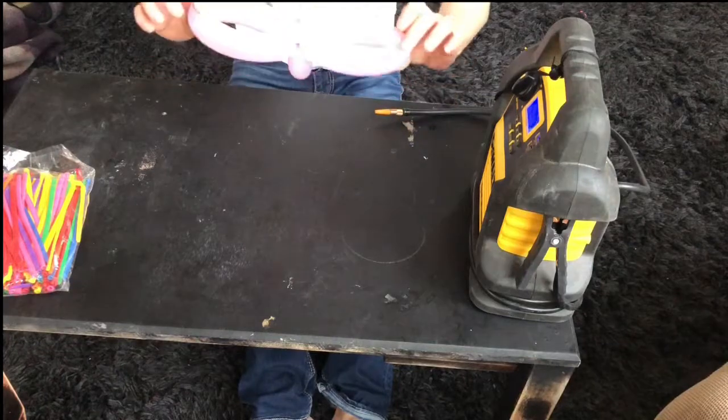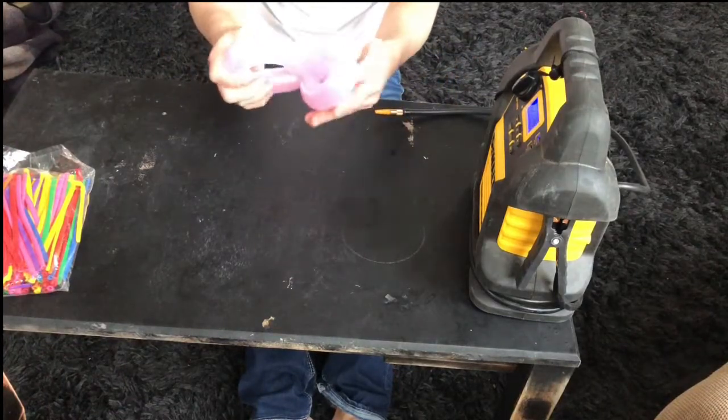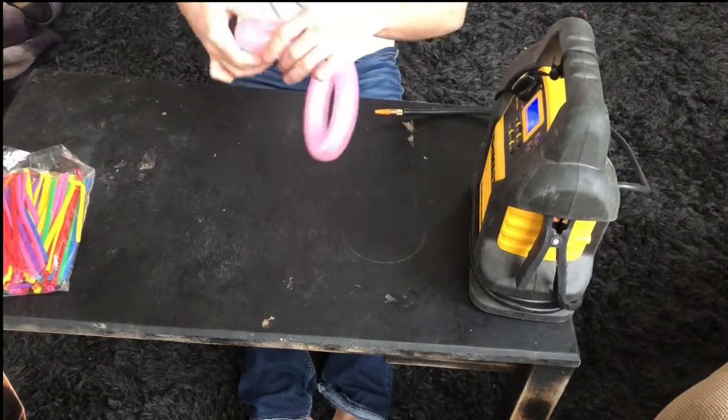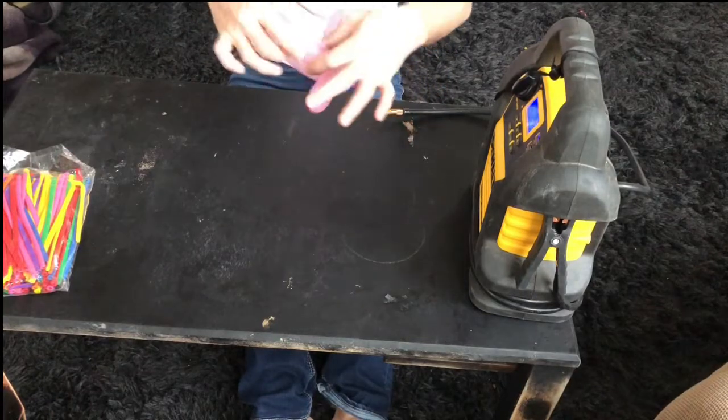This is what you should end up with right now, and you're going to hold these together right here. Make sure they're the same length, and right here where the wings are.